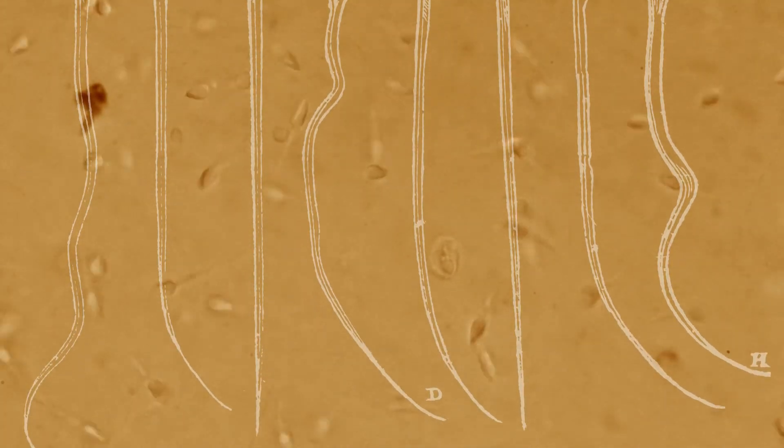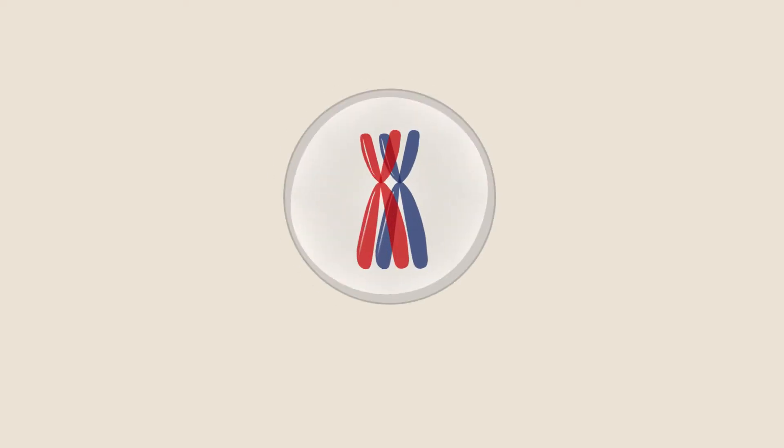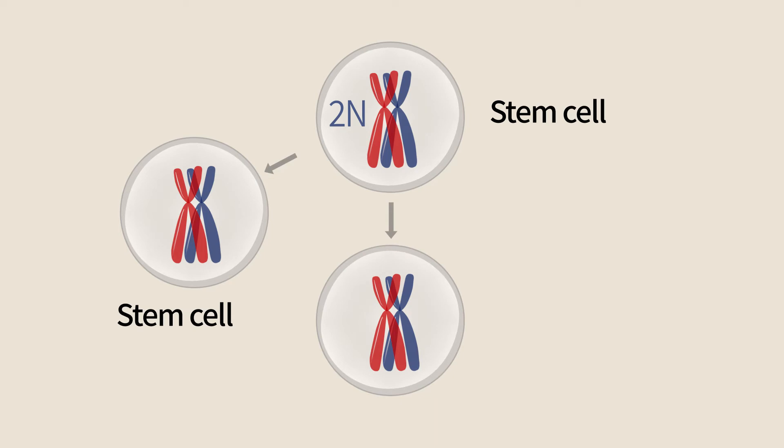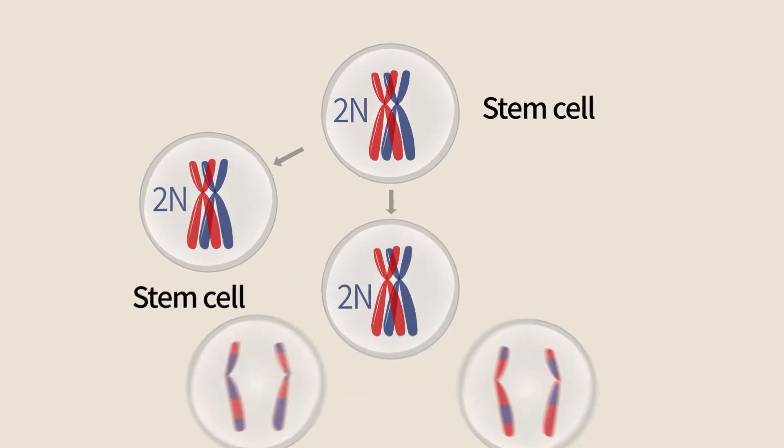Sperm cells develop from diploid stem cells that are labeled here by 2N. These stem cells undergo mitosis. Half of the daughter cells will remain diploid stem cells while the other half undergoes meiosis and differentiation to sperm cells.